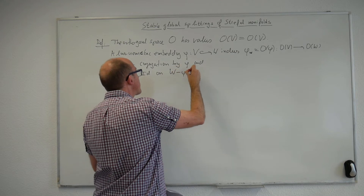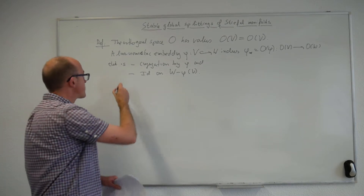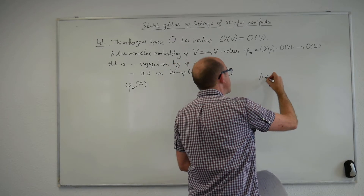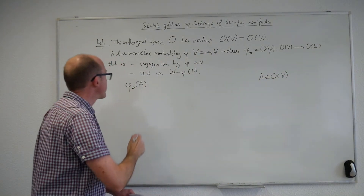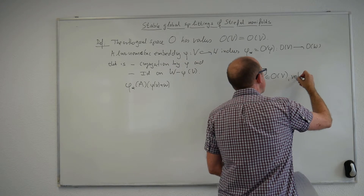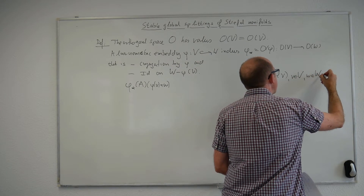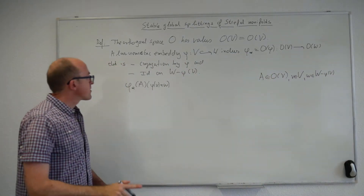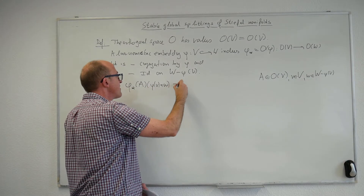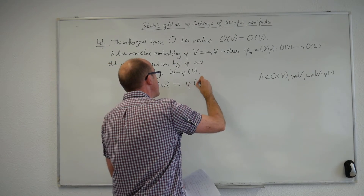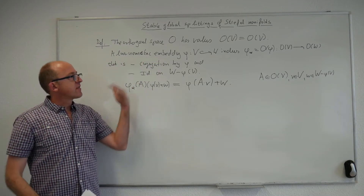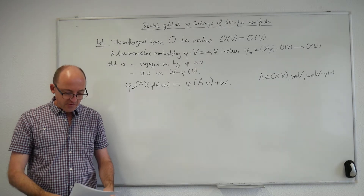The structure map is given by conjugation by φ and the identity on the complement of its image in W. In formulas: φ_*(A), where A is a linear isometry of V, at φ(v) + w where v is in V and w is in the orthogonal complement of the image of φ, equals φ applied to A acting on v, plus w. Every vector in W can be uniquely written in this form, so this is a full definition.